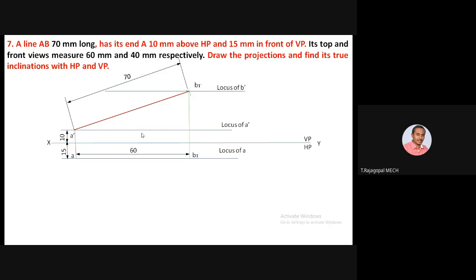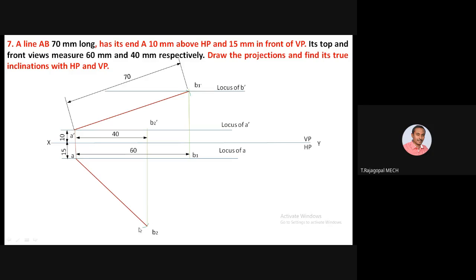The true length of the line is 70 mm. Take A as center, 70 mm as radius, and draw an arc to cut the projector extended from the front view 40 mm line. In the front view this point is B2-dash, and in the top view it is B2. Join A and B2 — this is the true length of line AB in the top view. Through point B2, fix the locus of B, parallel to XY.